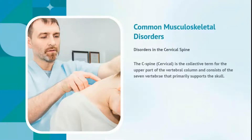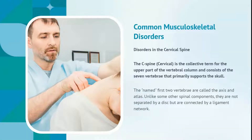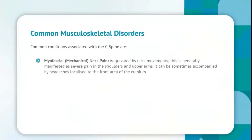Common musculoskeletal disorders. Disorders in the cervical spine: the C-spine is the collective term for the upper part of the vertebral column and consists of the seven vertebrae that primarily support the skull. The first two named vertebrae are called the axis and atlas, and unlike some other spinal components, they are not separated by a disc but are connected by a ligament network. A common condition is myofascial mechanical neck pain, aggravated by neck movements, generally manifested as severe pain in the shoulders and upper arms, sometimes accompanied by headaches localized to the front area of the cranium.